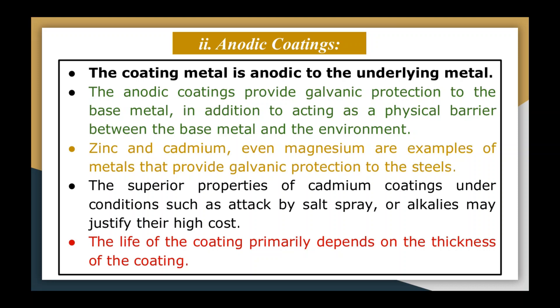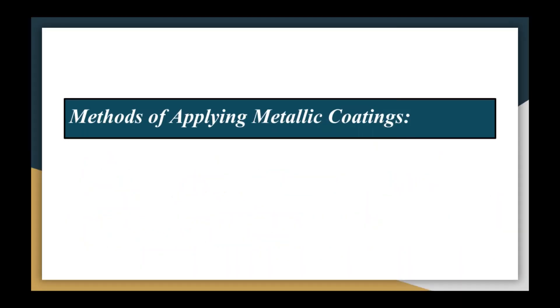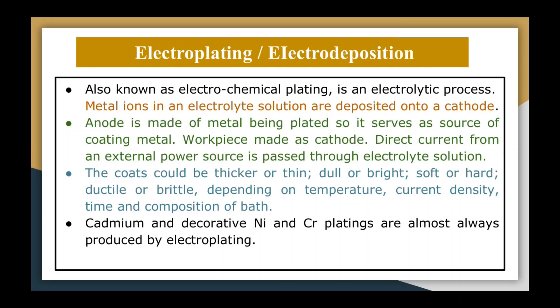Now let us move further and discuss the different methods of applying metallic coatings, beginning with electroplating. Electroplating is also known as electrodeposition or electrochemical plating, and it is an electrolytic process. In this process, metal ions in an electrolytic solution are deposited on the cathode.